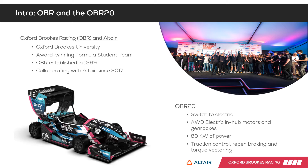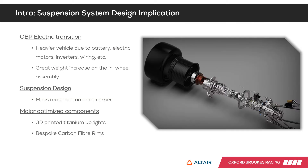This year's race car is the OVR20, which is the first full electric race car designed by OBR. It features four electric motors — one per wheel — with a peak power of 80 kilowatts. This powertrain layout offers the possibility to implement regenerative braking, torque vectoring, traction control, and much more. The transition to electric has significantly increased the mass of the race car, mainly due to the battery with a weight of 45 kilograms. The addition of the electric motor plus the gearbox on each wheel assembly also contributes to this increase.